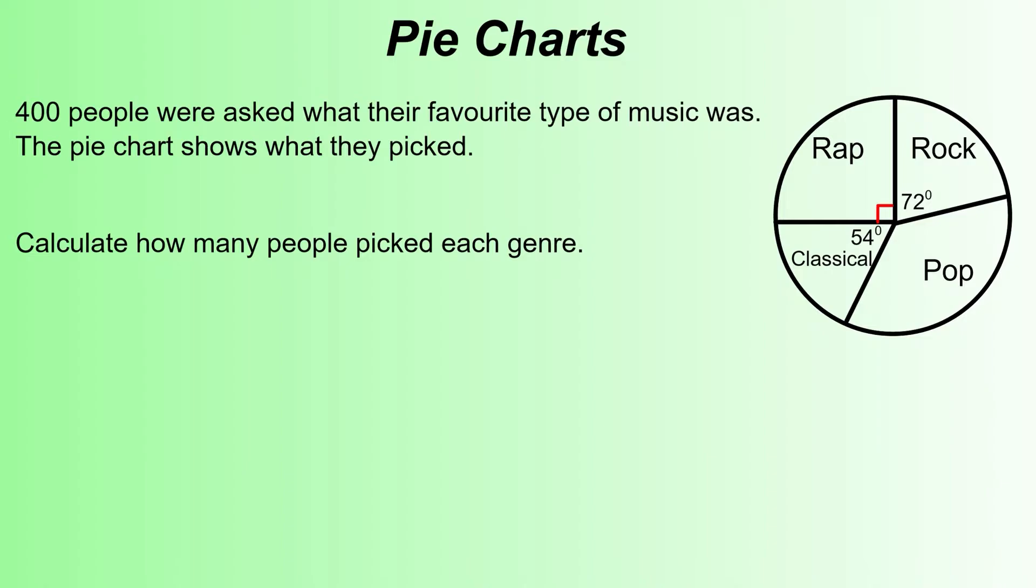Let's start off with rap. Rap has a right angle which is 90 degrees, so the fraction of the pie chart would be 90 degrees out of 360. That's the fraction of the number of people who picked rap. The number of people was 400, so we're looking for that fraction of 400. Multiply and that should give you 100 people.